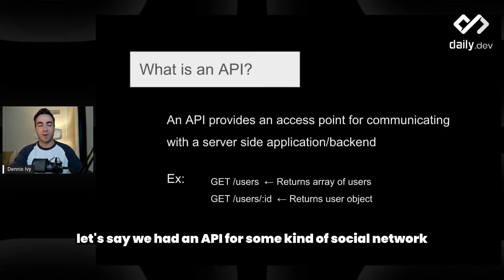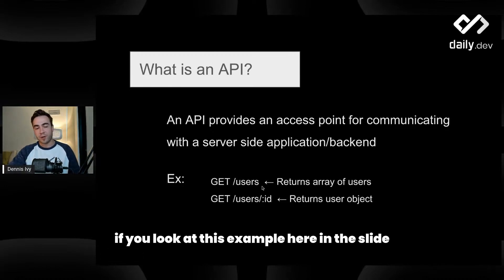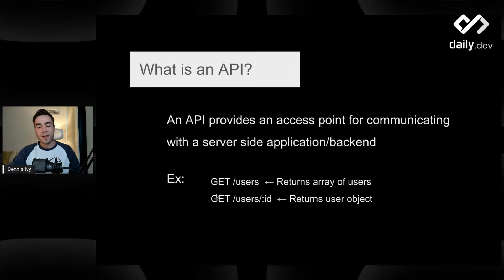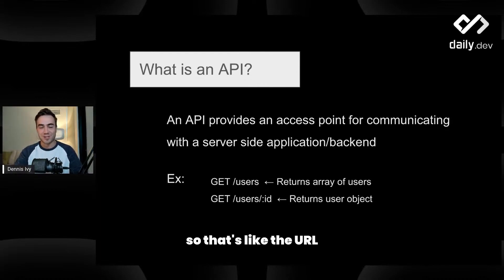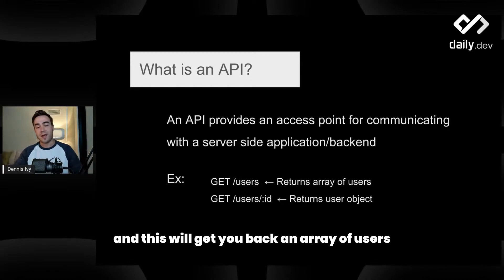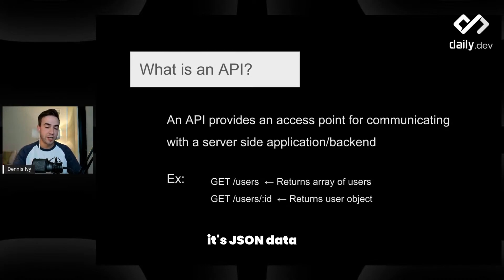For example, let's say we had an API for some kind of social network and we had users. If you look at this example here in the slide, you would go to some endpoint like mywebsite.com/api/users. So that's like the URL, the endpoint, and this will get you back an array of users in JSON format. You usually use XML or JSON — more commonly it's JSON data.